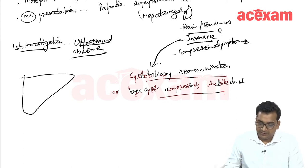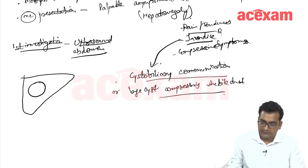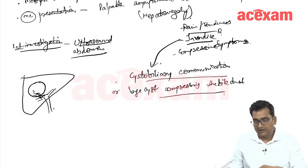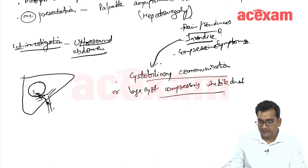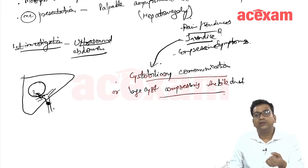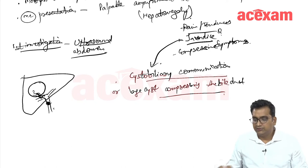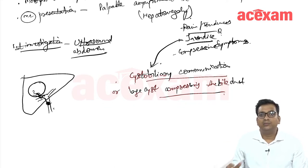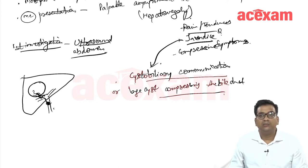If there is a large intrahepatic cyst, a communication may develop between the cyst and the bile duct, allowing scolex to enter and block the bile duct, causing jaundice. If jaundice is present in a patient with hydatid cyst, we should suspect a cystobiliary communication and proceed with MRCP to assess the biliary system.